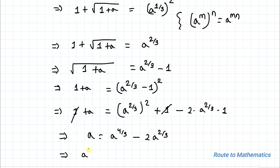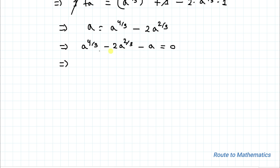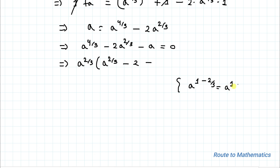Taking 'a' to the right-hand side, we get a^(4/3) − 2·a^(2/3) − a = 0. Now let's factor out a^(2/3). When we factor a^(2/3) from the term 'a', we use the rule: a = a^(1) and 1 − 2/3 = 1/3, so the remaining factor of 'a' becomes a^(1/3). This gives us a^(2/3) · (a^(2/3) − 2 − a^(1/3)) = 0.